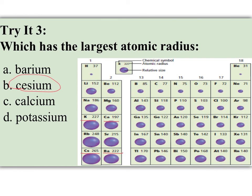Well, when you're comparing left to right, the elements further to the left are going to be bigger. So potassium is bigger than calcium, cesium is bigger than barium. And as you go down, they get bigger. So cesium is going to be bigger than potassium, and barium would be bigger than calcium. So the lower left corner is our biggest losers.